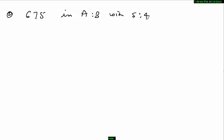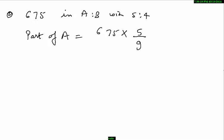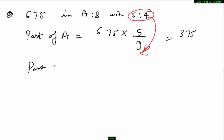Problem number 2: divide 675 in A and B in the ratio 5 to 4. The part of A would be 675 into 5 upon 9. The 9 in the denominator comes from the addition of both ratio parts (5 + 4 = 9). After simplification, this comes to 375.